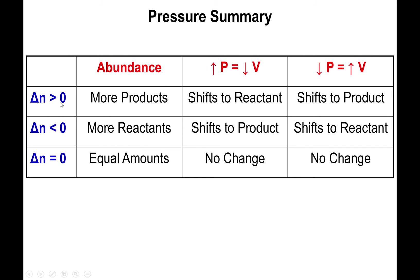If delta N is greater than zero — meaning more products — decreasing volume shifts to the reactant side, and decreasing volume is the same as increasing pressure. Increasing volume shifts to the product side, which is the same as decreasing pressure. You can still use the same table as for volume; just remember the pressure effect is opposite to the volume effect. If volume increases, pressure decreases, and vice versa — opposite effects, but the same underlying table.